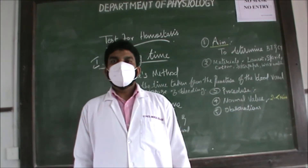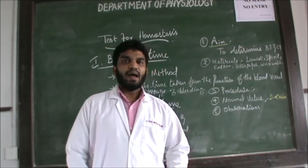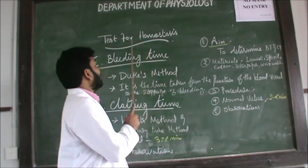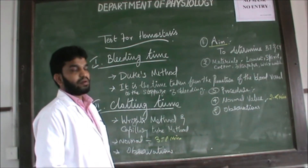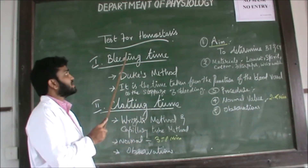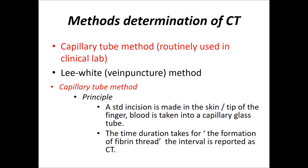Good morning everyone. Following pandemic precautions, today I am going to demonstrate the practical on the topic of tests for hemostasis. When this topic comes, students remember two major topics: one is bleeding time and another is clotting time. For determination of clotting time, the most routinely used laboratory method is the capillary tube method. Apart from this, another method is known as the Lee White method, also called the vein puncture method.